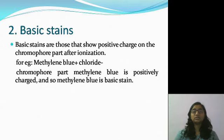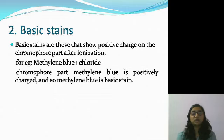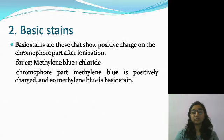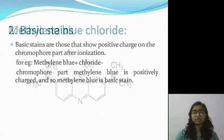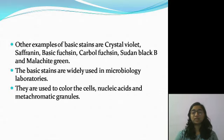Then we looked at what basic stains are. Basic stains are those which show a positive charge on the chromophore part after electrolytic dissociation. Because they carry a positive charge, basic stains will stain the acidic components in the cell — those components that have a negative charge will be colored by basic stains. An example we discussed is methylene blue chloride: methylene blue⁺ is the chromophore part carrying a positive charge, and chloride⁻ is the counter ion. So methylene blue chloride is a basic stain.